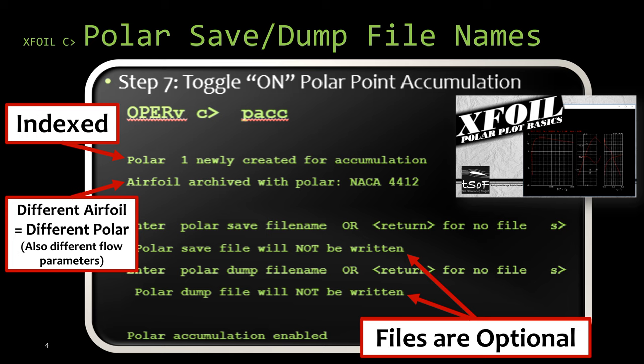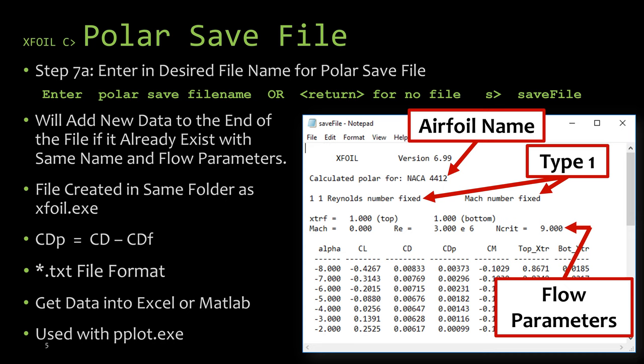So let's briefly introduce what these files are and what some of the data they contain is. To create a polar save file, in step 7 of the previous video, we would have had to enter in the desired file name we want to give to the polar save file and hit enter when it asked for it. By providing the file name, we are telling XFOIL to not only create the file, but also to automatically store the polar data into this file.